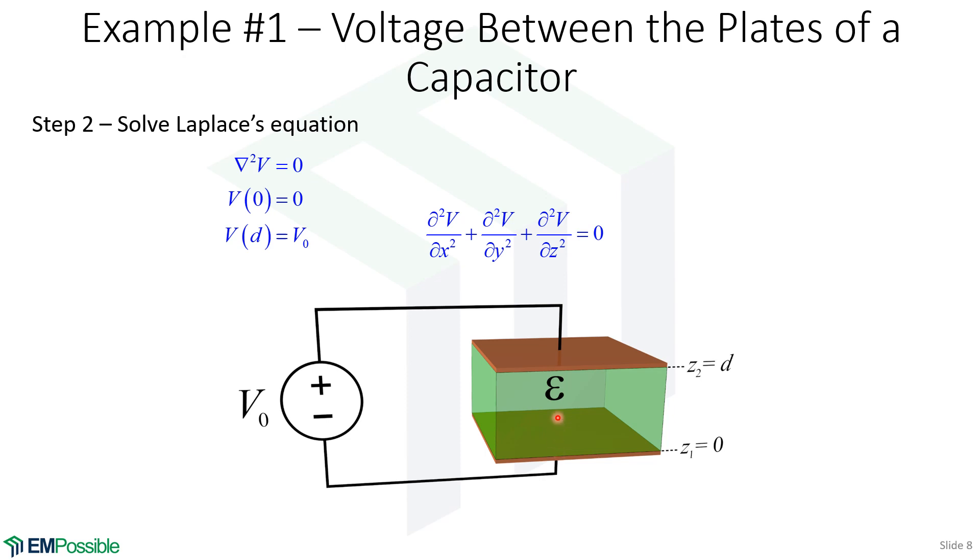It's not varying in the X and Y directions, only the Z direction. So we can cross off those X and Y derivatives. We only have one independent variable left now. That's Z.